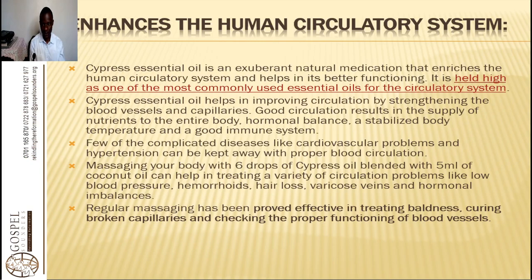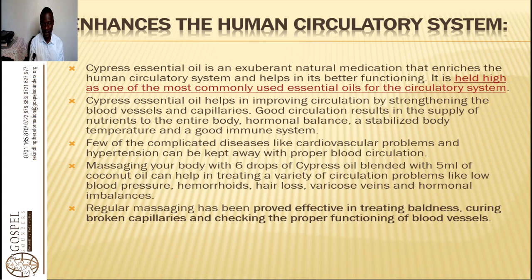Cypress essential oil enhances the human circulatory system. It is an excellent natural medication that enriches the circulatory system and helps in its better functioning, and is held as one of the most commonly used essential oils for circulation. It helps improve circulation by strengthening the blood vessels and capillaries. Good circulation results in the supply of nutrients to the entire body, hormonal balance, a stabilized body temperature, and a good immune system. Complicated diseases like cardiovascular problems and hypertension can be kept away with proper blood circulation.